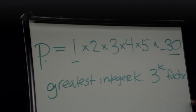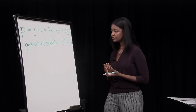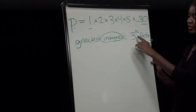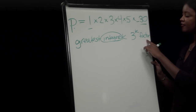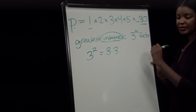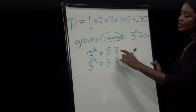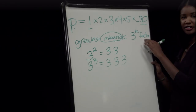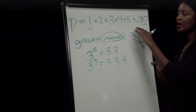We first have to identify the key terms. An integer is a whole number, so k is a whole number. When we see 3 to the power of k written as an exponent, k represents the number of threes that are factors of p. If k is 2, we have two threes; if k is 3, we have three threes. Another word for factor is divisor — so how many threes can be divided into, or are divisors of, this product p?